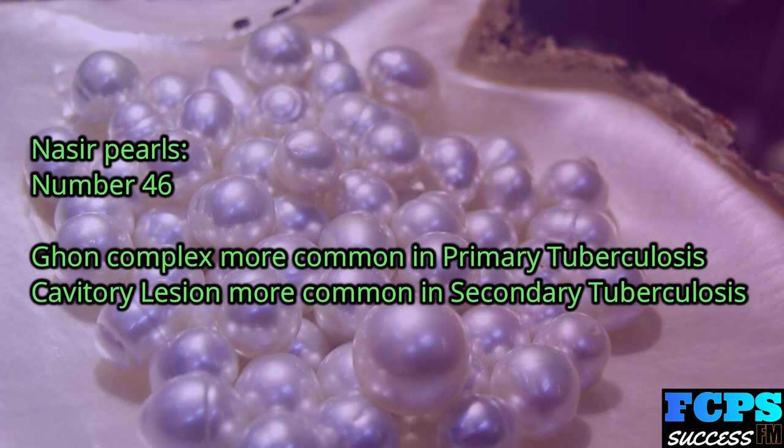Nasir Pearl number 46: The Ghon complex is more common in primary tuberculosis. The cavitary lesion is more common in secondary tuberculosis.